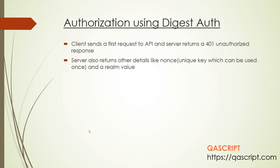The specialty with this type of authorization is that you need to send another request to the server, because the server is going to return some details along with the 401 unauthorized response. It's going to return details like a nonce — a unique key that could be numeric or alphanumeric — and also a realm value. With the combination of these two values you can actually authorize your request, and you'll need them when sending a second request to the server.